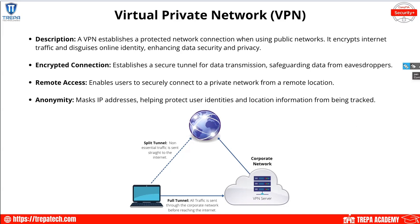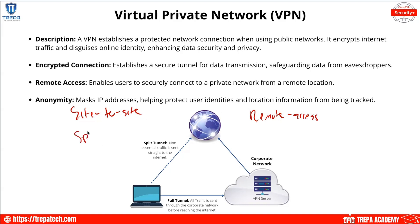We're going to have two major types of VPNs: a site-to-site VPN and a remote access VPN. Between these two, we can either have a split tunnel or a full tunnel configuration. A site-to-site VPN is literally site-to-site — router to router.